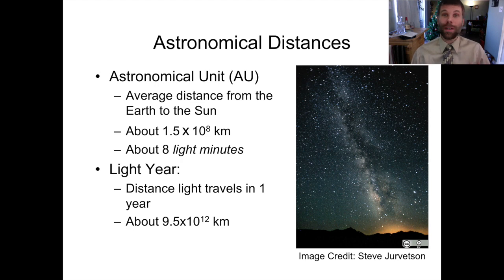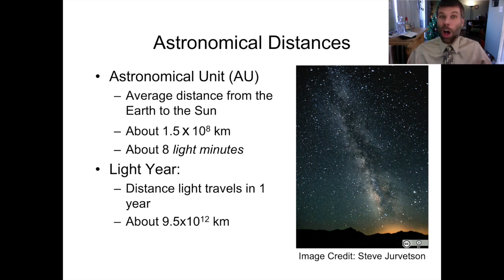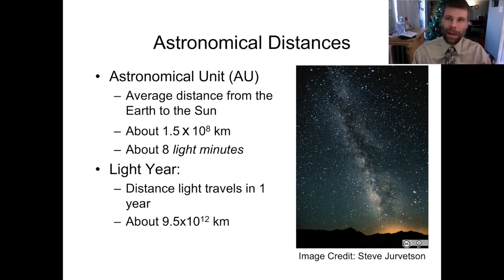Astronomical units are really big, and the solar system is a large place filled with lots of empty space. But the galaxy is even bigger still. The galaxy contains the Sun and all of its neighbor stars, and when measuring distances within the galaxy, we typically report those in light years — the distance that light travels in one year. That is around 9.5 times 10 to the 12 kilometers, much bigger than one astronomical unit — in fact, about 100,000 times larger. So the nearest star, about four light years away, is roughly 400,000 times farther away from the Earth than the Sun is.